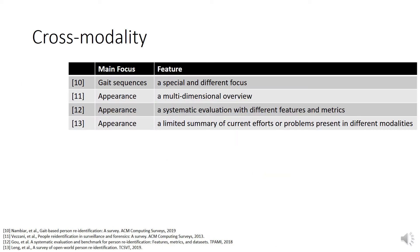To our knowledge, there are a few surveys in the person re-ID field. Paper 10 explored re-ID applications built on gait sequences. Paper 11 focused on general re-ID and made a multidimensional overview. Paper 12 provided a systematic evaluation with different features and metrics. Paper 13 started to look into some inter-modality challenges but provided a limited summary of current efforts. Our tutorial tries to provide a summary of current research from different aspects.